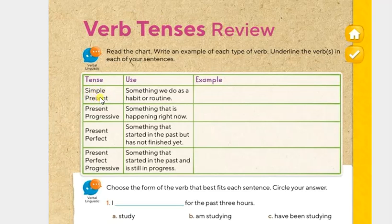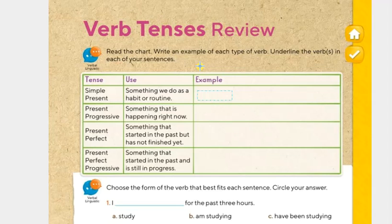The tense is simple present. When do we use simple present? When we want to say something that we do as a habit or a routine — that's when we use simple present. A sentence in simple present can describe something that we do as usual. For example, using the verb 'walk': I walk to school every day. Don't forget the period.